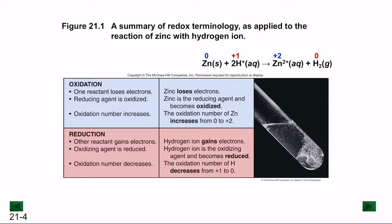Consider the example: Zn + 2H⁺ → Zn²⁺ + H₂. Zinc solid has an oxidation number of zero, and H⁺ has an oxidation number of plus one. In the products, Zn²⁺ has a charge of plus two and H₂ gas is zero. Zinc increases in oxidation number, meaning it loses electrons and is oxidized, while hydrogen ion decreases in oxidation number, meaning it gains electrons and is reduced.